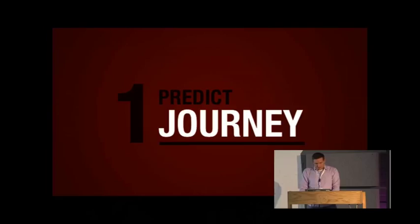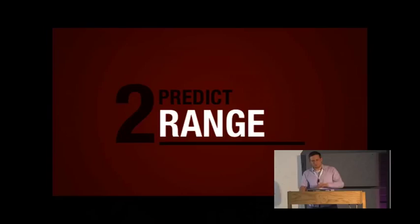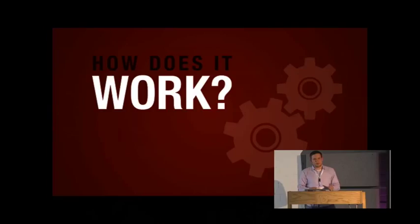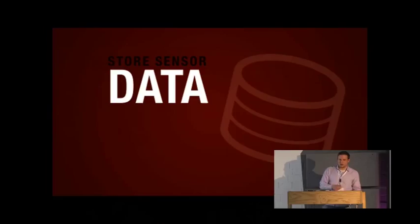Let's talk a bit about the data science. The first use case is predicting the journey, and the second is predicting the range based on the journey prediction. A journey starts the moment you switch on your car and ends once you switch it off. By collecting lots of historic data, we're able to generate a driving behavior fingerprint of these kinds of journeys. Given this fingerprint, we can compare it to your current drive and see which journey is the most likely one you're on. We can only predict journeys you've been on previously — we don't predict new journeys.